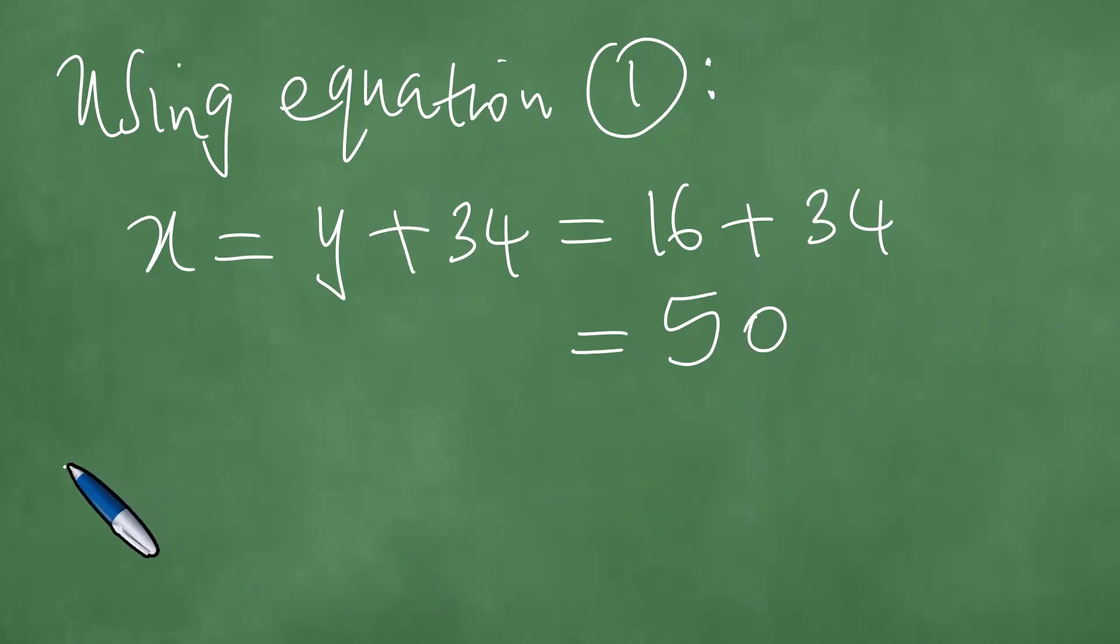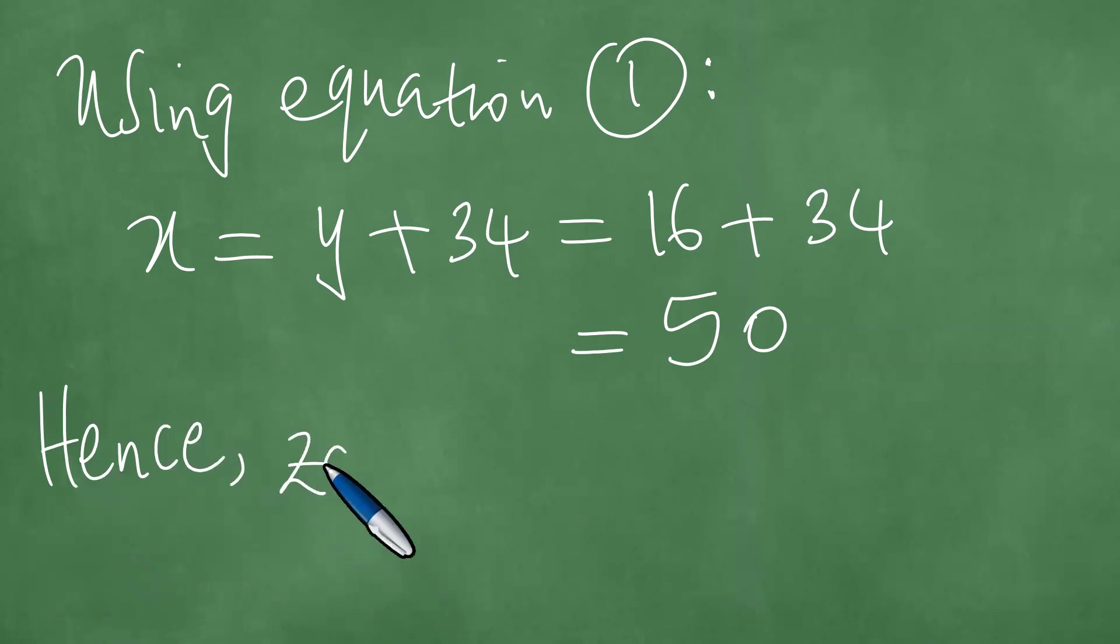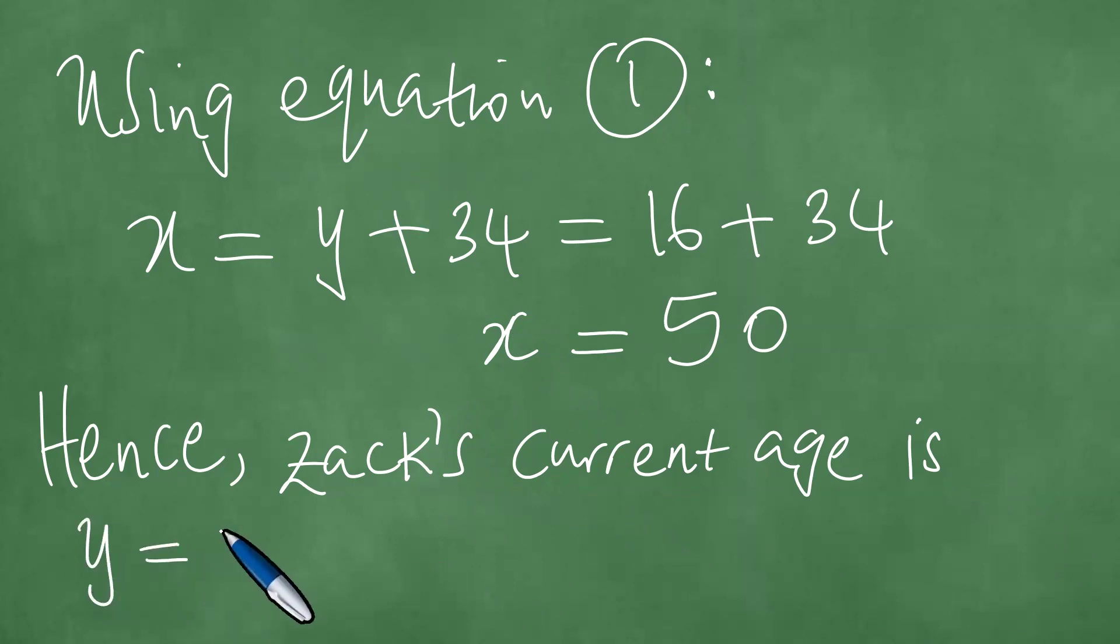Now, Zack's, we use the word hence. Zack's current age is, now remember that Zack's age is Y. So Zack's current age is Y equals 16.